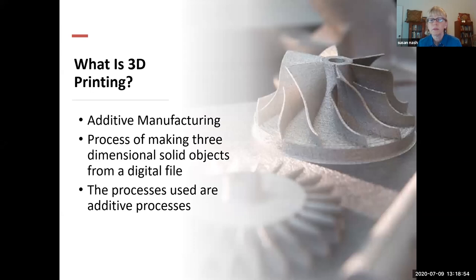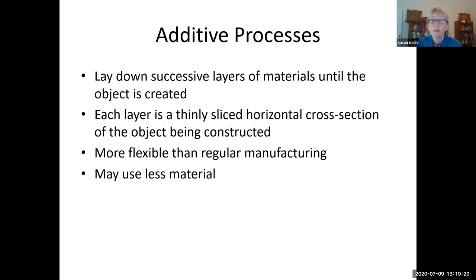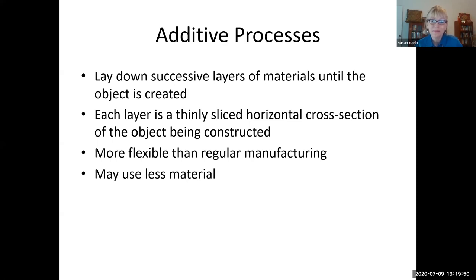3D printing is the process of making three-dimensional solid objects from a digital file, using additive — or accretionary — processes. You lay down successive layers of material until the object is created; each layer is a thinly sliced horizontal cross-section of the object being constructed. If you want to get into 3D printing, start thinking in 3D immediately — do sketches, get out your Minecraft, start building things up, and think about looking at things horizontally, vertically, in plan view.